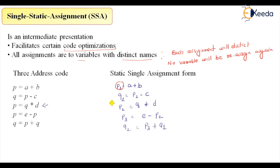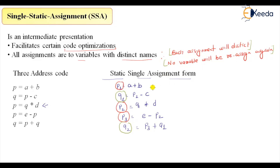This is one assignment. This is another assignment — two different variables. This is another assignment with a different variable. This is another assignment in q1, and this is another assignment in q2. So no variable will be assigned again, and each assignment will be distinct. That's all for this static single assignment form. It is a type of three address code, but assignment is restricted to only once.